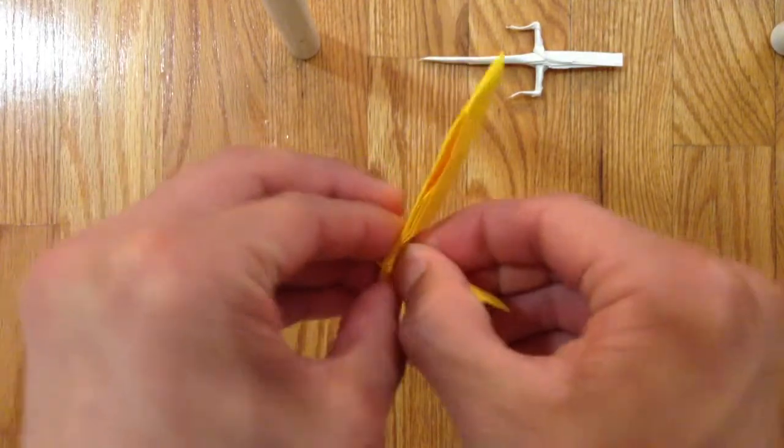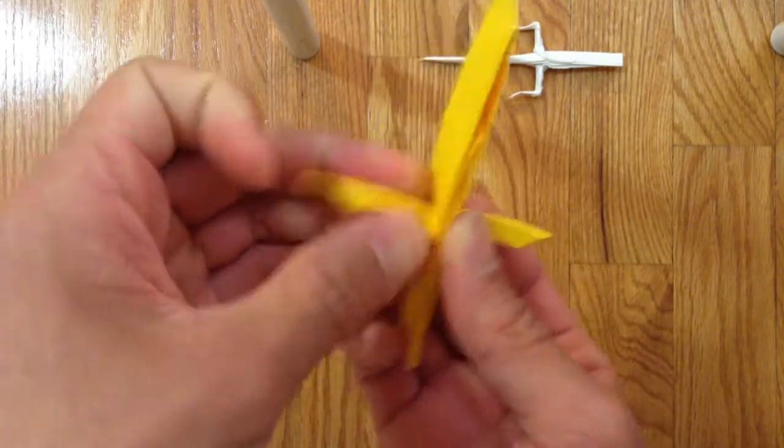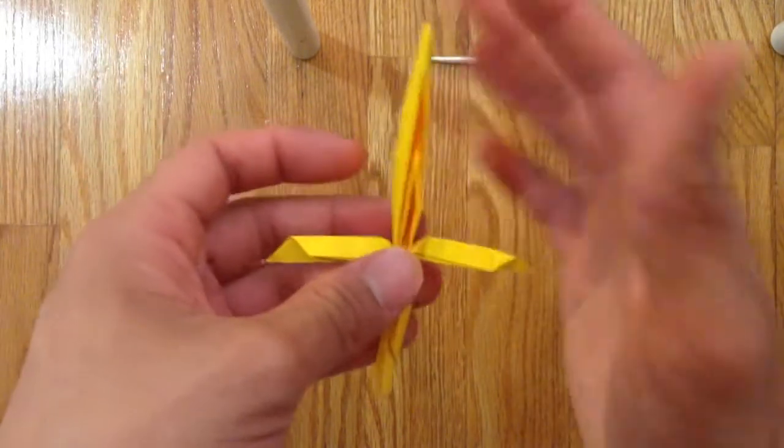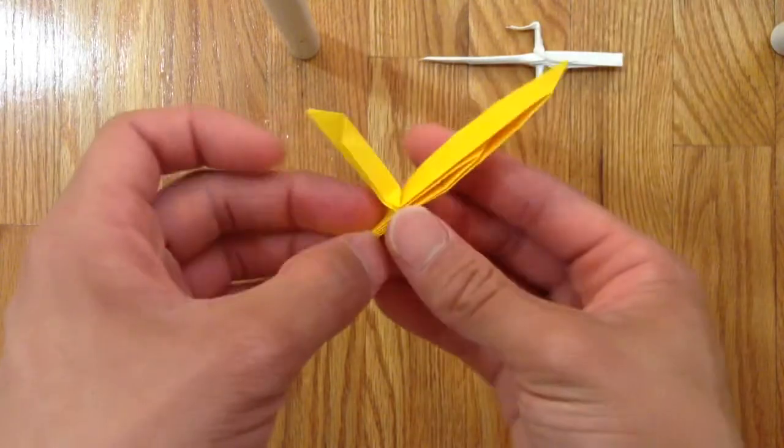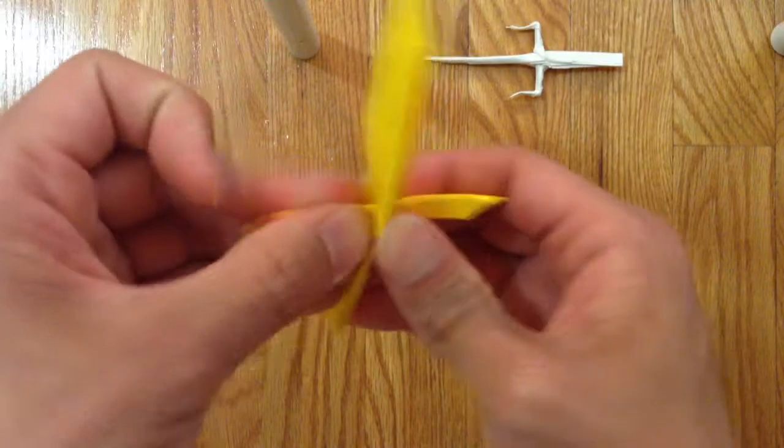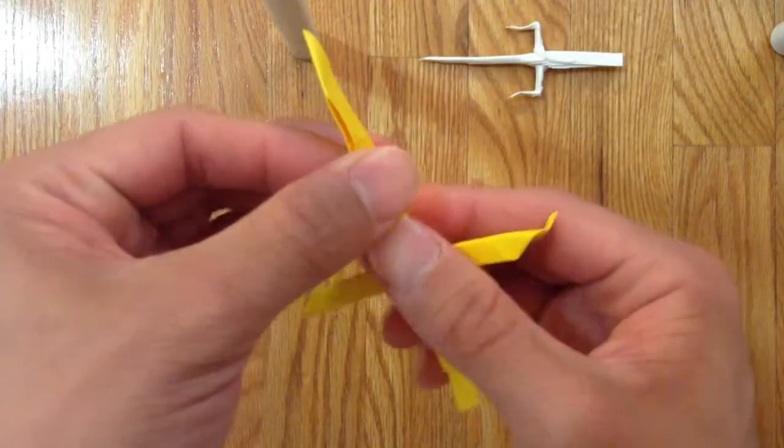Like this, and put it against the model. Then you want to fold this vertical piece in half and put it inside.